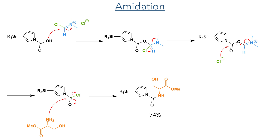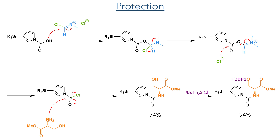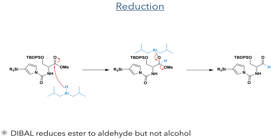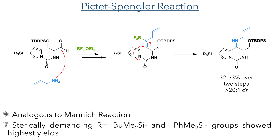This acyl chloride was then reacted directly with L-serine methoxy ester, forming the urea in a 74% yield, and this was then protected with tert-butyldiphenylsilyl chloride. Taking this compound forward, it was reduced using DIBAL. The hydride acts as a nucleophile towards the ester, which then eliminates methoxide and selectively forms the aldehyde without further reduction to the alcohol. This aldehyde was necessary for the Pictet-Spengler reaction.